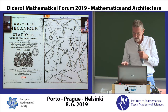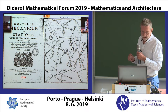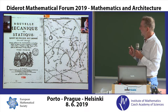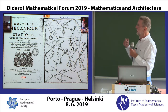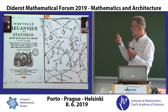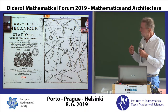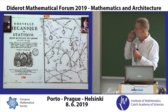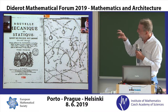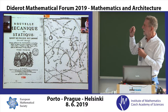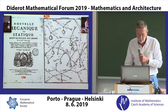A bit before Diderot there was Varignon, who people are very interested in now because there's been a resurgence of interest in the relationship between statics — that's the equilibrium of forces — and geometry. What Varignon did in this diagram was to show various relationships between loads and tensions applied by weights and by people pulling.